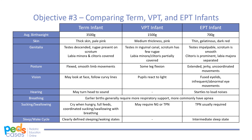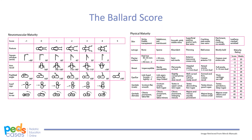A useful tool on the wards is the Ballard score. When completing a newborn exam, clinicians can roughly estimate a neonate's gestational age using this tool. The Ballard score is based on the neonate's physical and neuromuscular maturity and is often used within the first 24 hours of life. It is accurate within plus or minus two weeks.